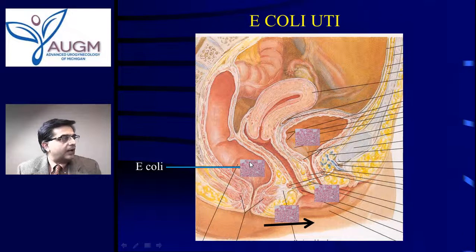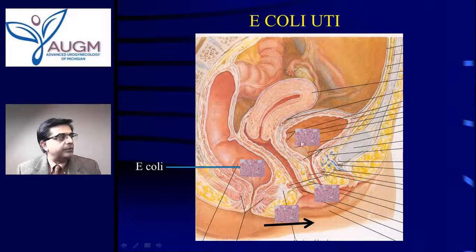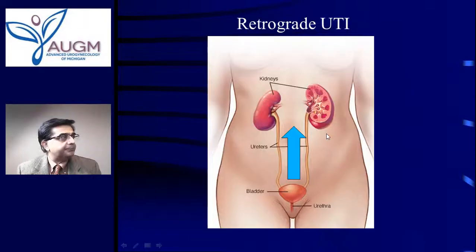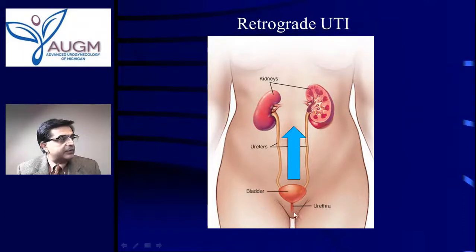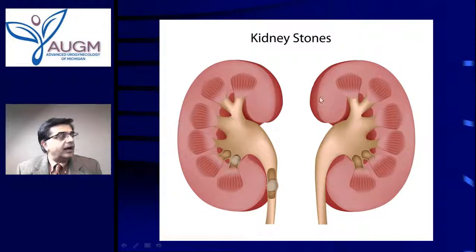The E. coli are moving forward and forward until they gain entry into the bladder. Once they cross this special barrier from the urethra into the bladder, they can cause mayhem and symptoms of a bladder infection — this is called cystitis. Now, if the infection goes from the bladder upward, it can cause a kidney infection, which is called retrograde — from the urethra up into the bladder and from the bladder up into the kidneys.